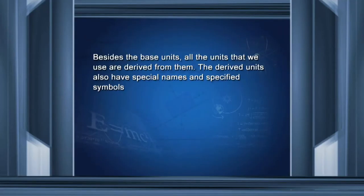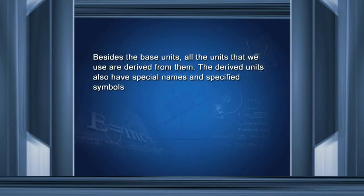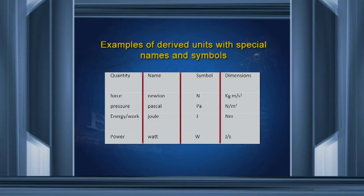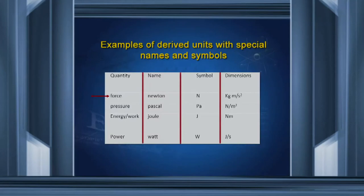Besides the base units, all other units we use are derived from them. These derived units also have special names and specified symbols. Force is the first in this list and its unit is newton with a small n — it is named after the great scientist Isaac Newton. Its symbol is capital N and its dimensions are kilogram meter per second squared. If you want to write 10 newtons, you write 10 with small n, or 10 capital N. You must always obey this system.